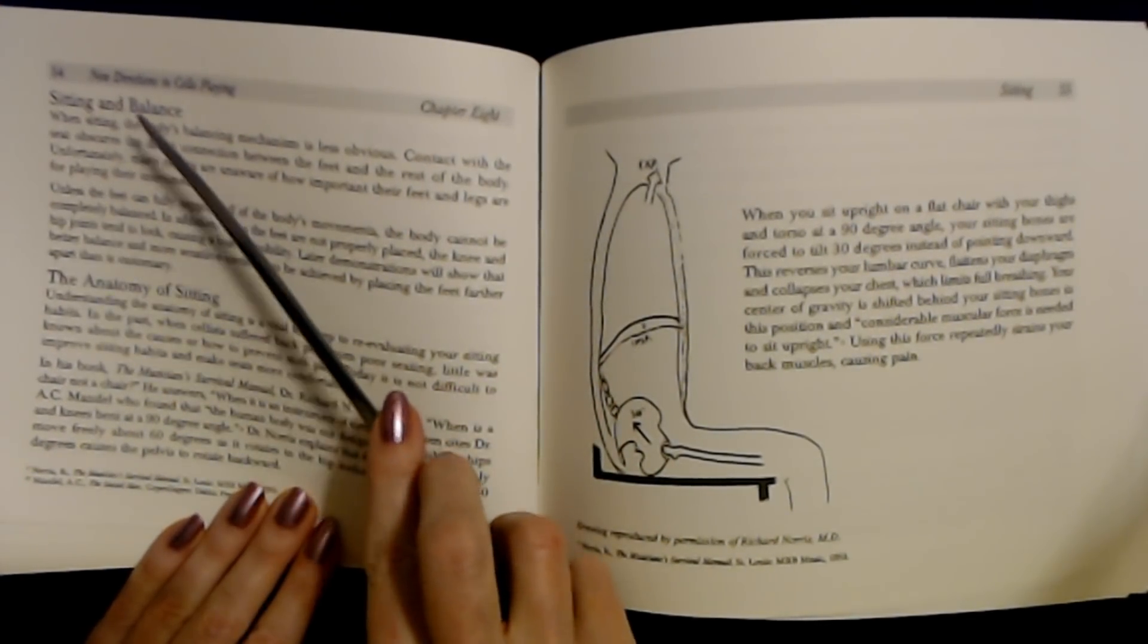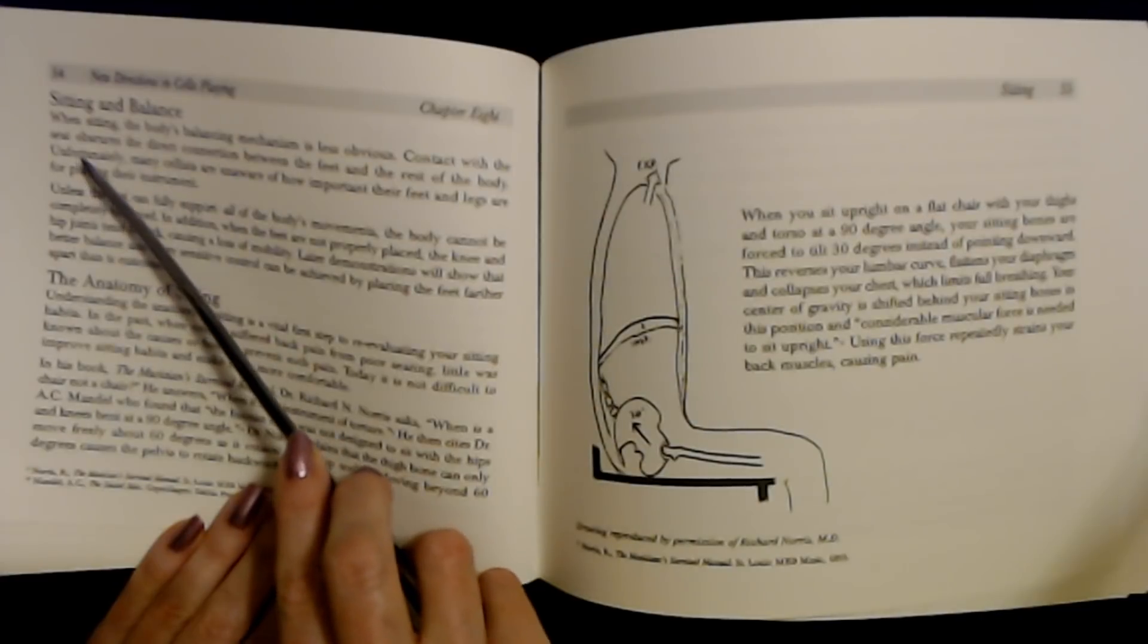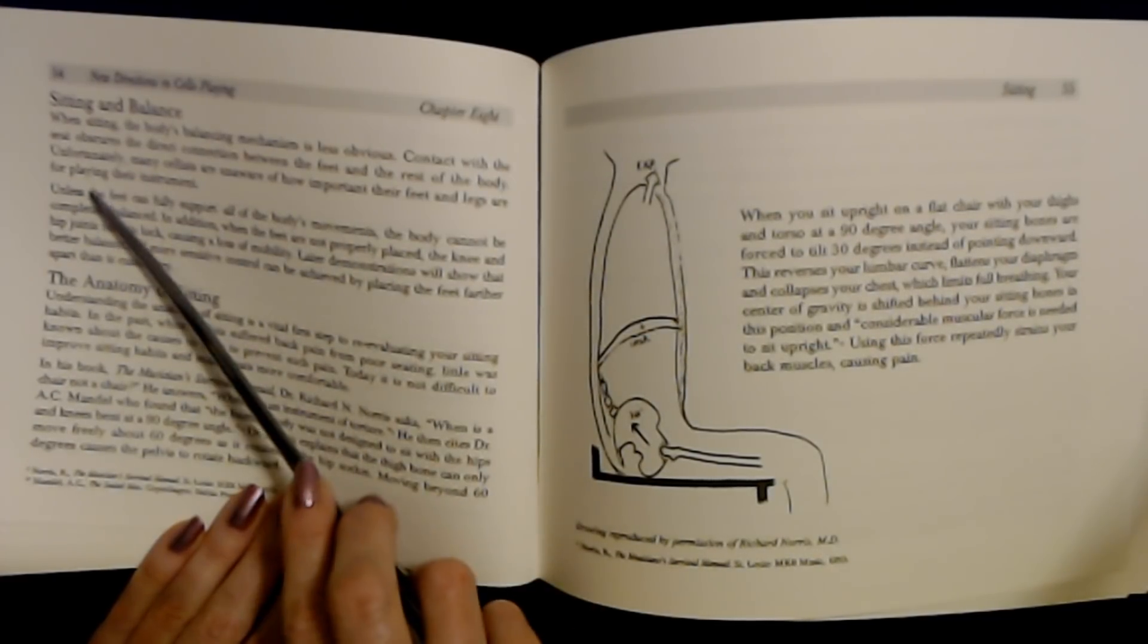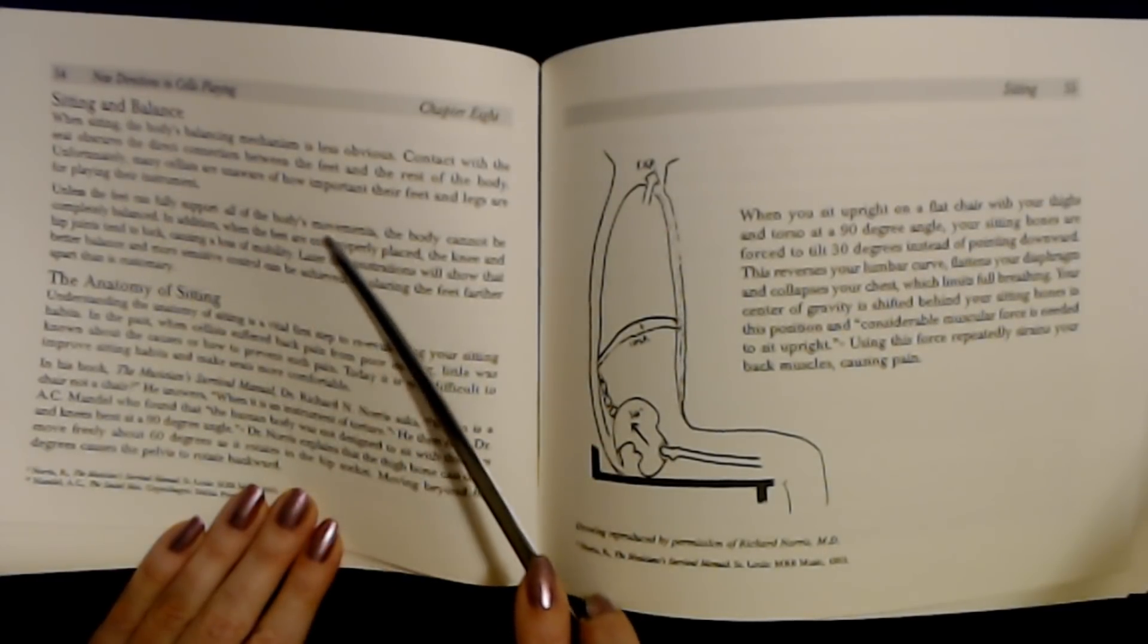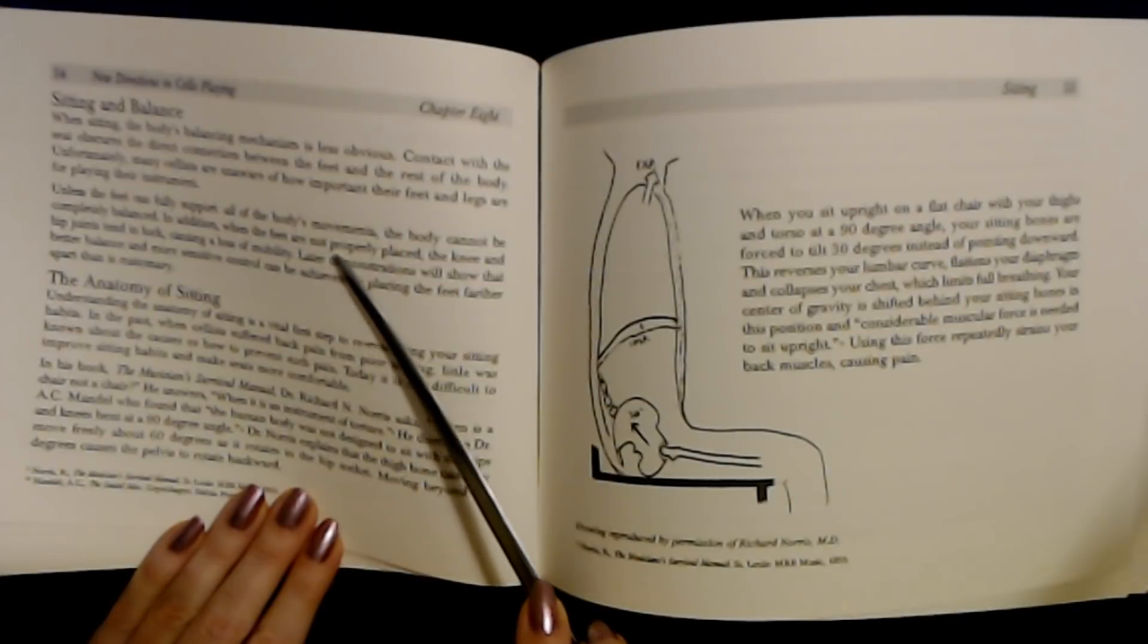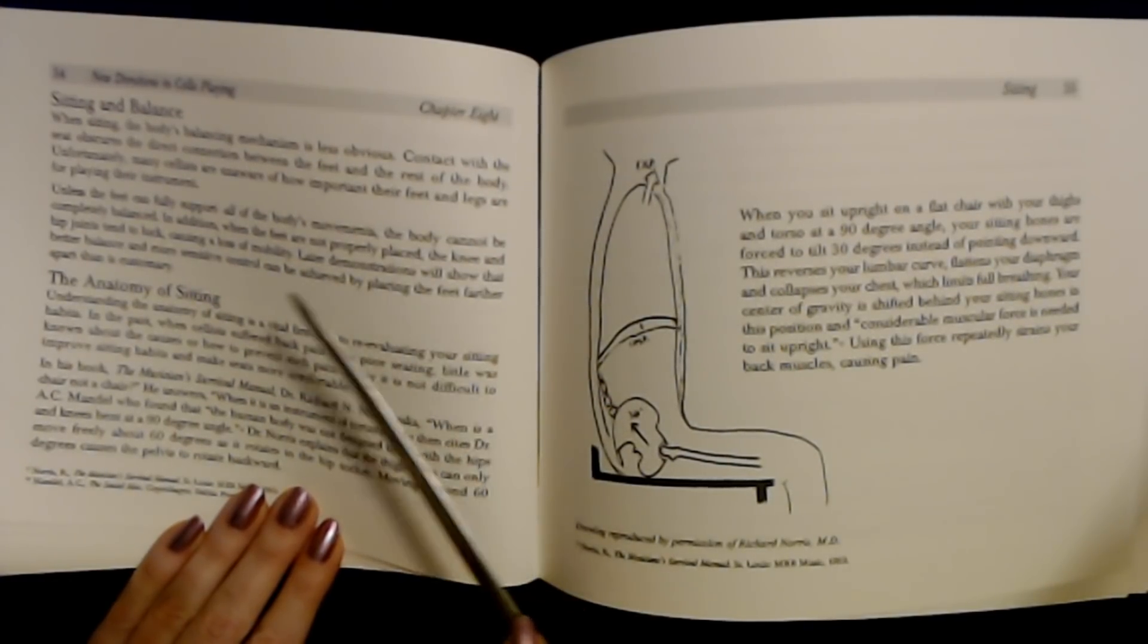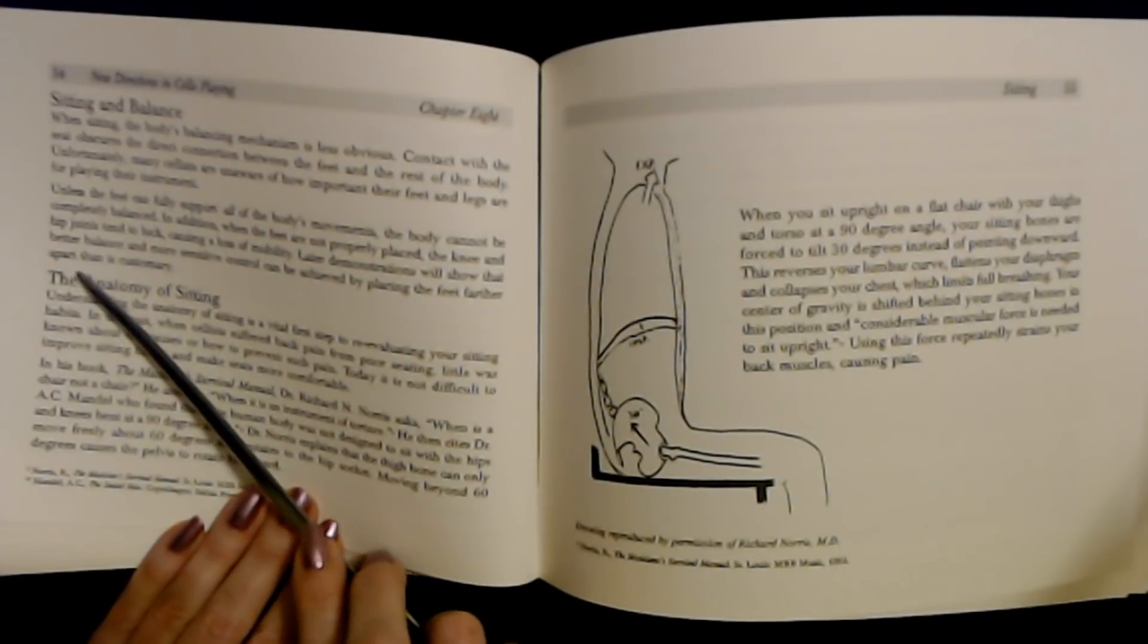Sitting and balance. When sitting, the body's balancing mechanism is less obvious. Contact with the floor disrupts the direct connection between the feet and the rest of the body. Fortunately, many cellists are unaware of how important their feet and legs are for playing their instrument. Unless the feet can provide support for the body's movements, the body cannot be completely balanced. In addition, when the feet are not properly placed, the knees and hip joints tend to lock, causing a loss of mobility.